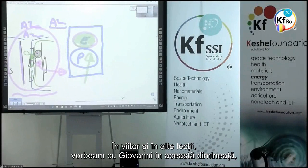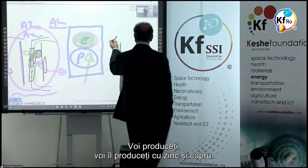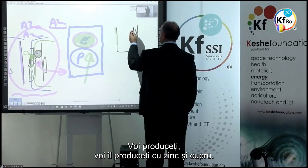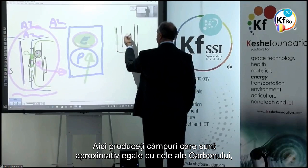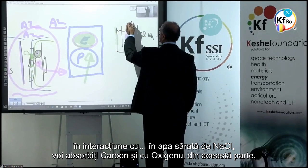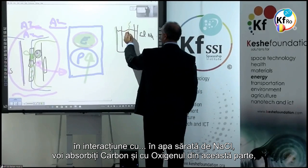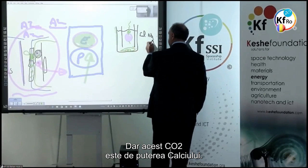In the future, and in other teachings — I was talking to Giovanni this morning. You create the GANS of CO2 or GANS of Zinc Oxide. You produce a top with Zinc and Copper. You produce fields which are equal roughly to Carbon, in interaction with the salt water of NaCl. You absorb some Carbon with Oxygen in this part, which gives you the residual of CO2. But this CO2 is in the calcium strain.